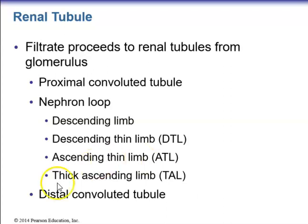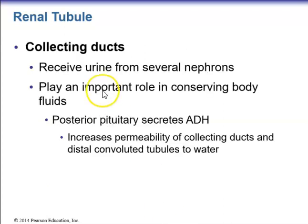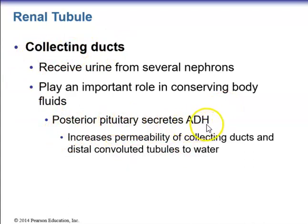Once the ascending limb crosses back into the cortex, it becomes the distal convoluted tubule. All distal convoluted tubules then drain into the collecting ducts. The collecting ducts play an important role in conserving body fluids; antidiuretic hormone (ADH or vasopressin), secreted by the posterior pituitary gland, increases the permeability of collecting ducts and distal convoluted tubules to water, concentrating urine.